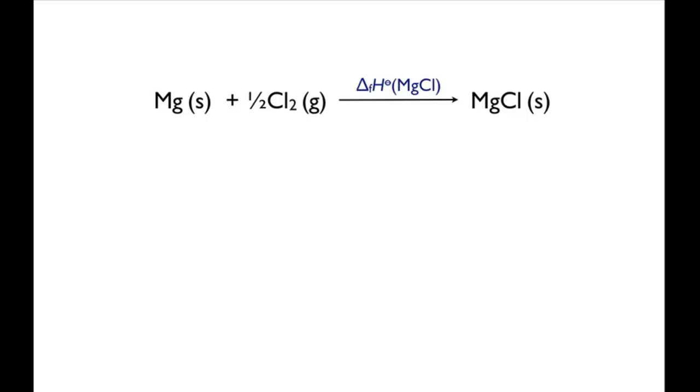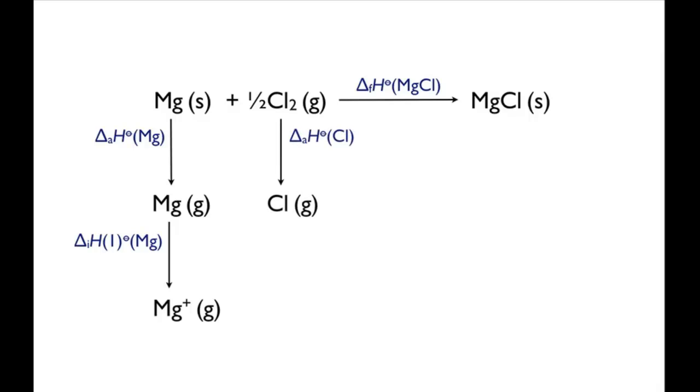In a Born-Haber cycle, you start with the elements in their standard states. Since magnesium chloride will be an ionic compound, you can break the reaction down into five steps, which are represented by the enthalpy of atomization of magnesium, the first ionization enthalpy for magnesium, the enthalpy of atomization for chlorine, the first electron gain enthalpy for chlorine, and minus the lattice enthalpy for magnesium chloride.